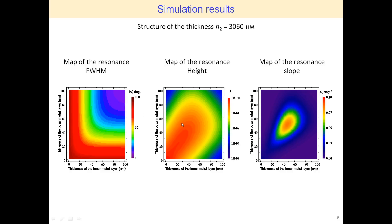The dependence of resonance height on the thickness of metal layers is shown in the central figure. The maximum height values are observed for minimum thicknesses of the metal layers. In both dependences, the width and height are symmetrical about the axis of equal thicknesses. The map of the resonance curve slope is shown on the right figure. The region of maximum values of slope of around 0.1 degree⁻¹ is observed at thicknesses of approximately 50 nm.